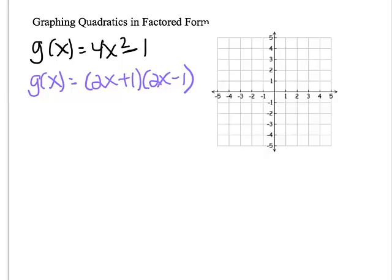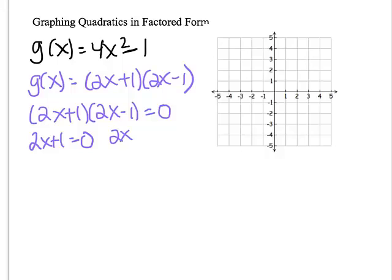Now that means that if I want to find my zeros, I'm going to set this whole equation equal to zero. And then I'm going to take a look at what happens if each factor is equal to zero. So my two solutions, or my two zeros, are -1/2 and positive 1/2. That means that I have the point (-1/2, 0) and (1/2, 0). So if I plot those, there's a point here, point here.